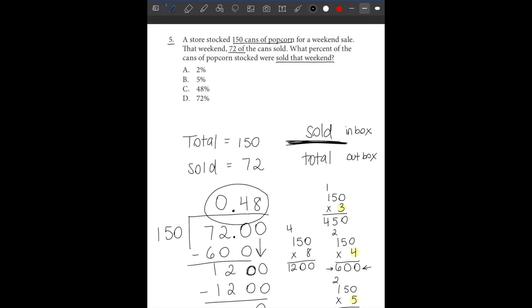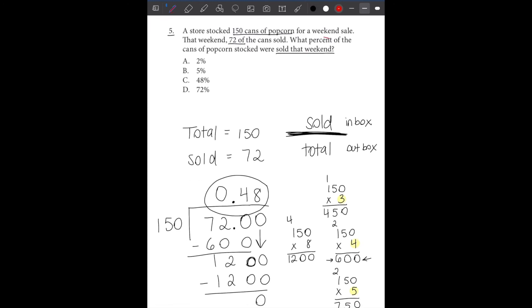But we want it as a percentage. So how do we make this answer into a percentage? Let's move our work up to here. Basically, we're going to do this times 100. When we do that, this decimal place moves over to the right 2 times, which basically just makes this 48%. So 48% is our final answer. You can do this multiplication on your own if you'd like, but the answer is 48%, which is option C.